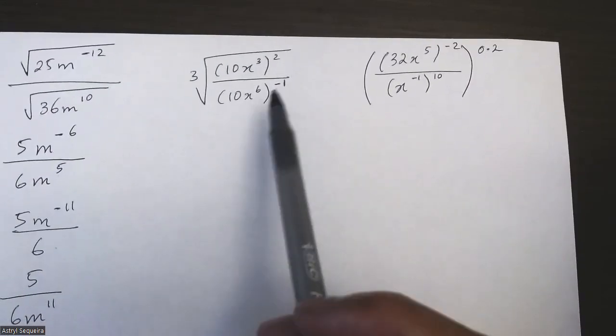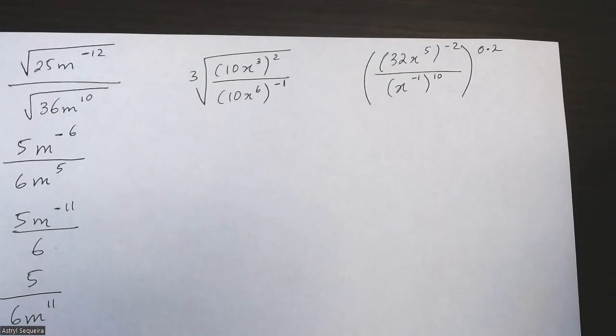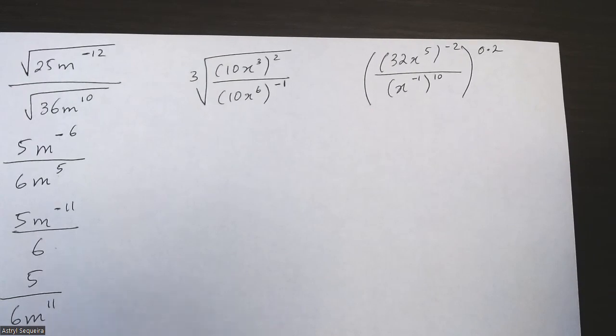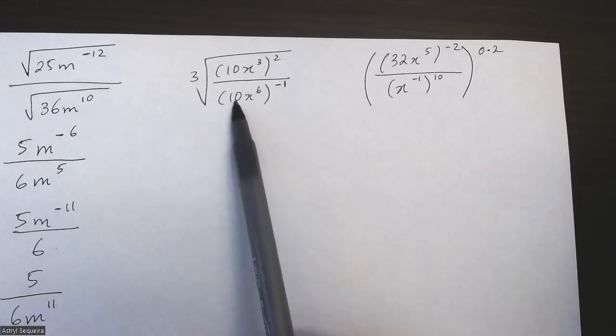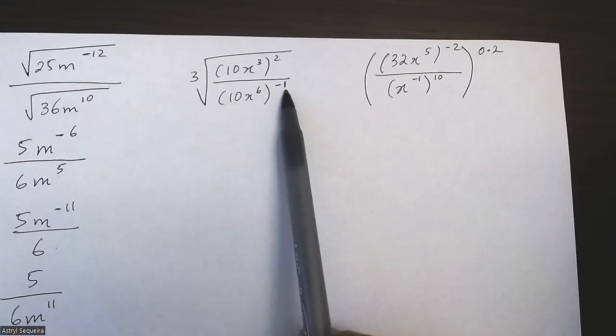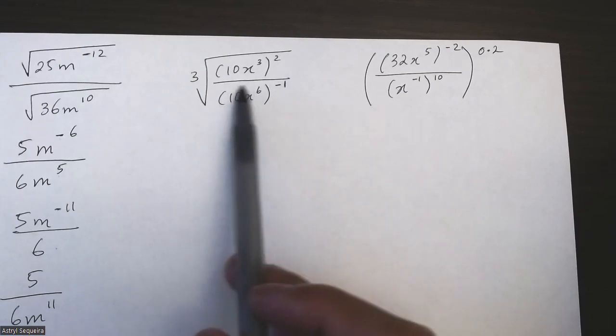Okay, for this question I first want to simplify the inside. I want to basically get rid of my brackets on the inside and then I want to distribute the exponent in. Now this is a bit of a tricky question because you have a negative exponent and you have a constant, which means you want to get rid of the negative exponent first in this question.